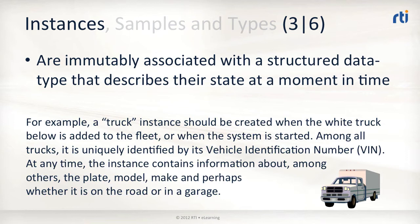Like all trucks in the fleet, the white truck has the associated topic name — let's say truck topic. Among all truck topic instances, the white truck is uniquely identified by its vehicle identification number, or VIN. At any time, the truck instance contains information about its plate, its model and its make, and perhaps whether it is on the road or in a garage. This is an example of a slowly changing instance.